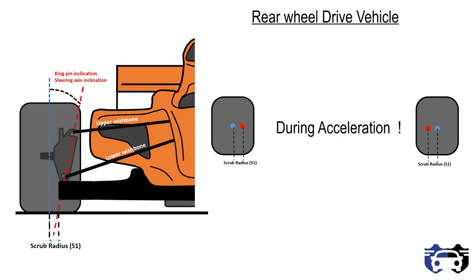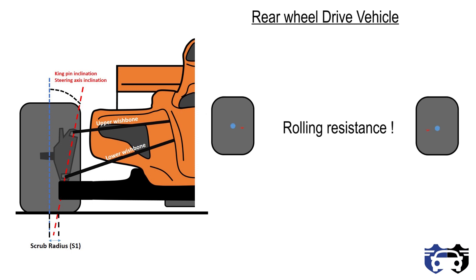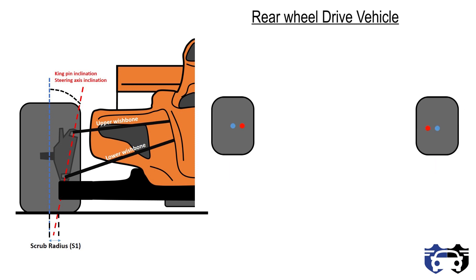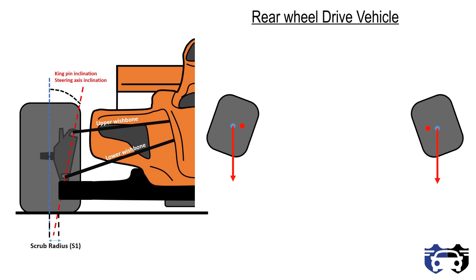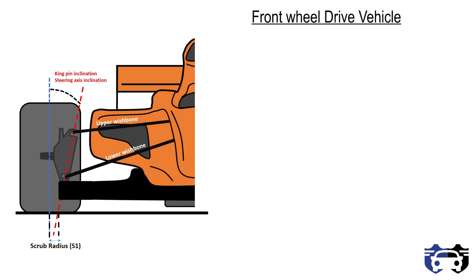In a rear wheel drive vehicle, as the car accelerates, the rear wheels push the front of the car forward. Because of this, the tires have a tendency to toe out while accelerating. This can be understood through rolling resistance — the rolling resistance acting at the center produces a torque about the steering axis due to scrub radius, making the wheels toe out. If we initially give a slight toe-in, the tires will experience a torque that straightens them during acceleration. This is why a slight amount of toe-in is provided in rear wheel drive vehicles.